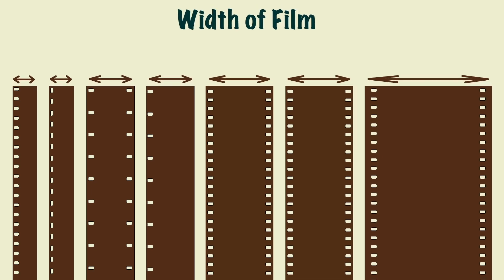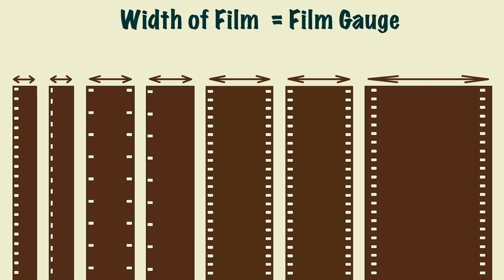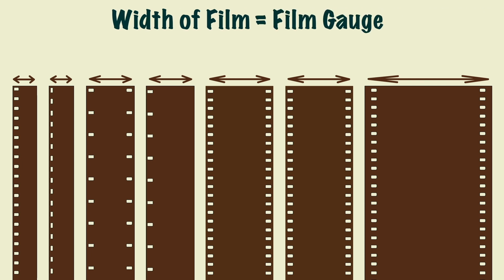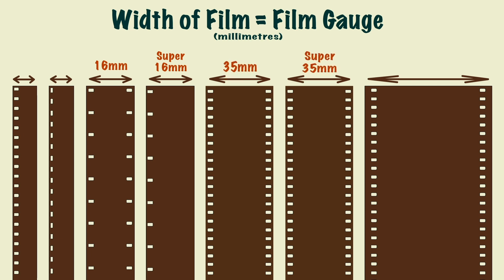Now, let's get into the different sizes of film. The width of the film strip is referred to as the film gauge. These are all measured in millimetres, such as 16mm or 35mm.